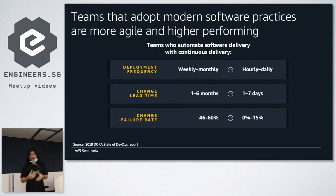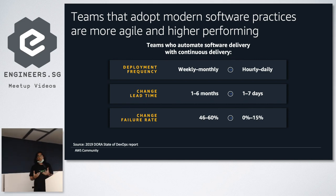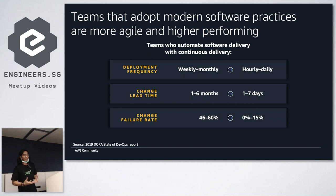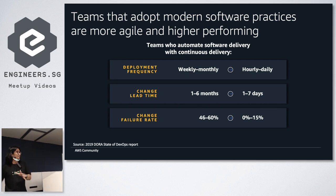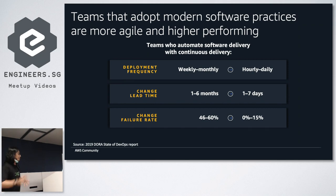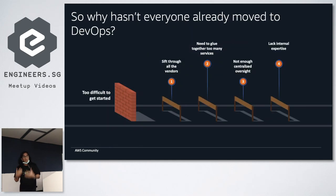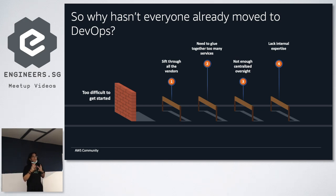The reason why DevOps has become more popular in recent years is that organizations gain more benefits from practicing it. They have more frequent deployments — from weekly or monthly to hourly or daily. They have lesser change lead time, reduced from one to six months down to one to seven days. The change failure rate drops from 46–60% down to 0–15%. This makes organizations more agile on delivering applications and giving value to customers. But the problem is, in reality, not everyone has moved to DevOps already — so why hasn't everyone moved if the benefits are that good?